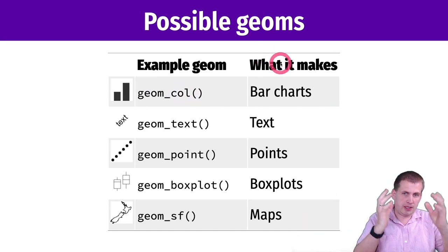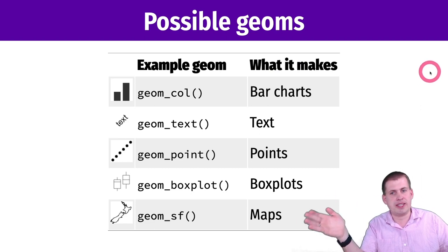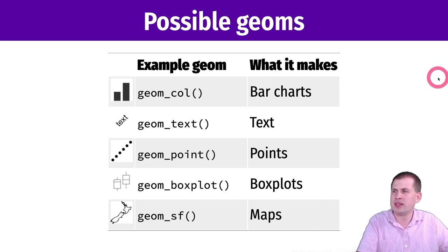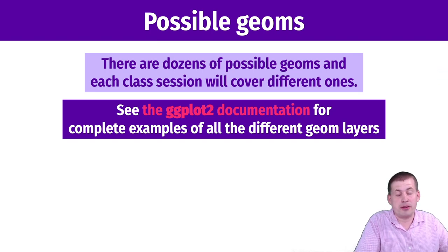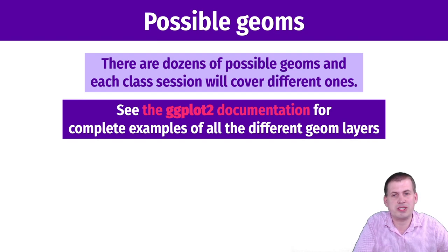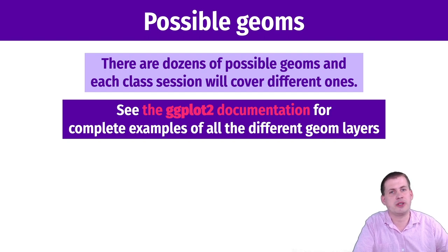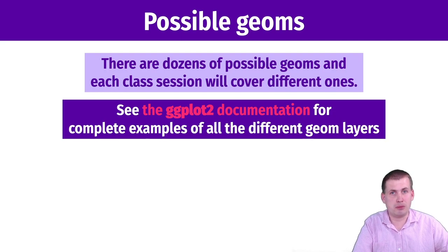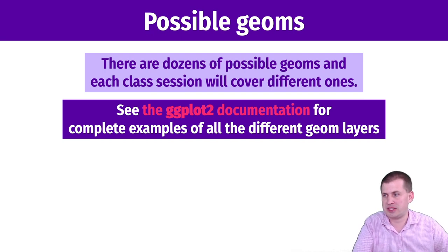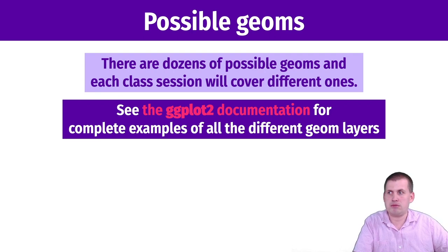There are advantages to separating data, aesthetics, and geoms. For the rest of this course, we'll cover all sorts of different geoms. As we get into specific topics — like showing relationships, distributions, or uncertainty — each general topic uses specific geoms. Bar charts, box plots, density plots, violin plots — those are all just different geoms. We can't possibly cover them all, but the documentation is a great resource.